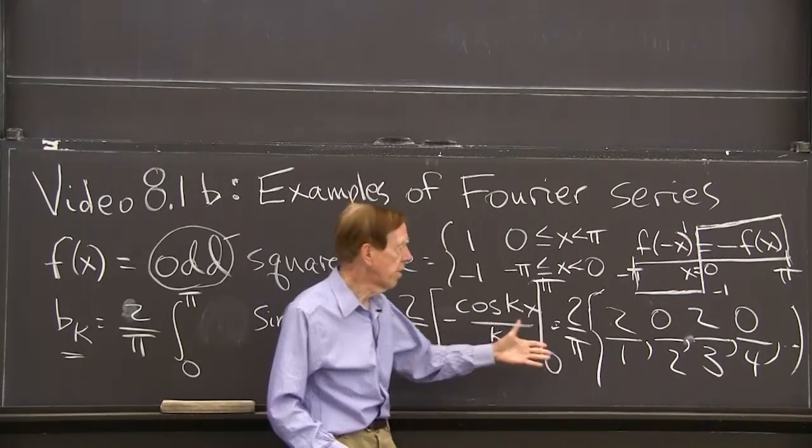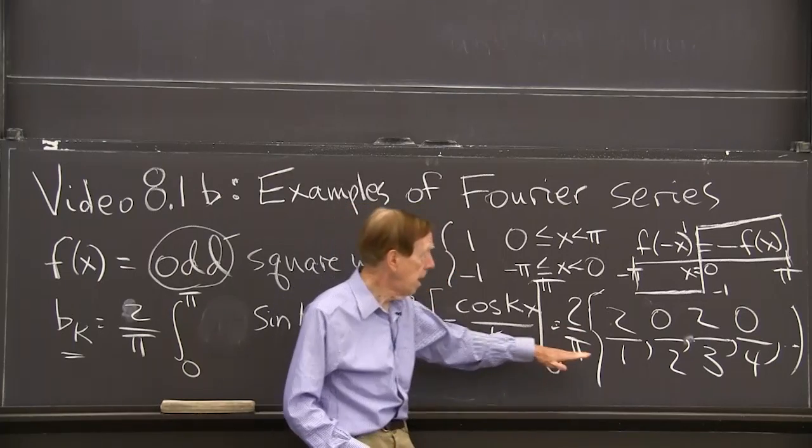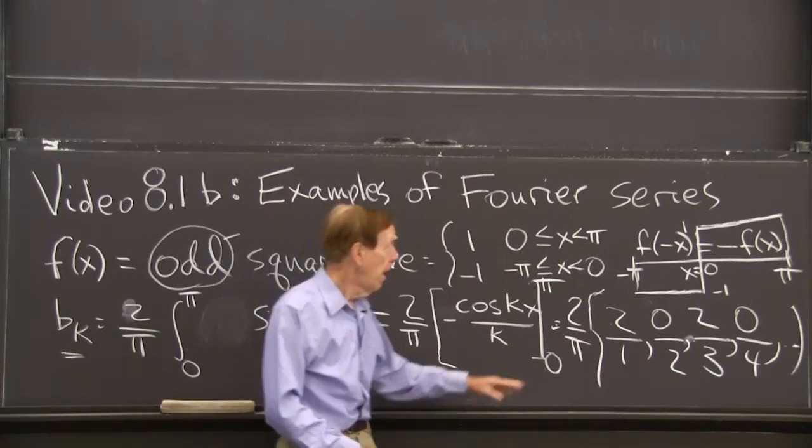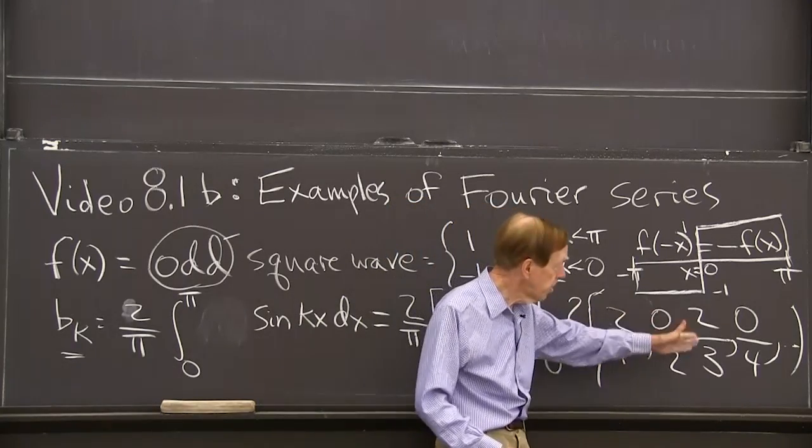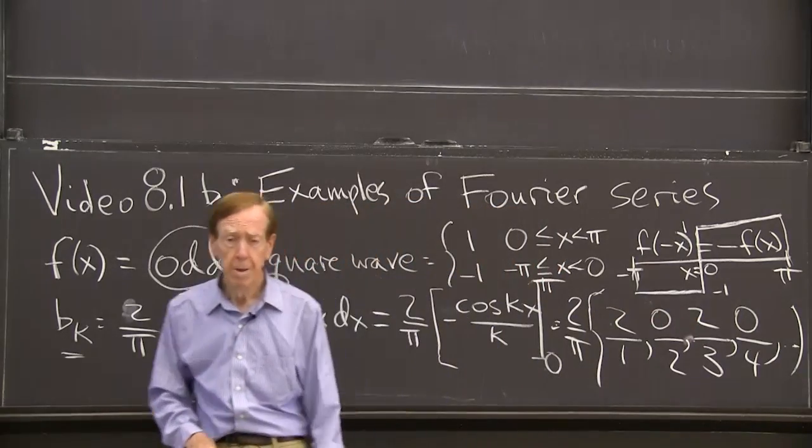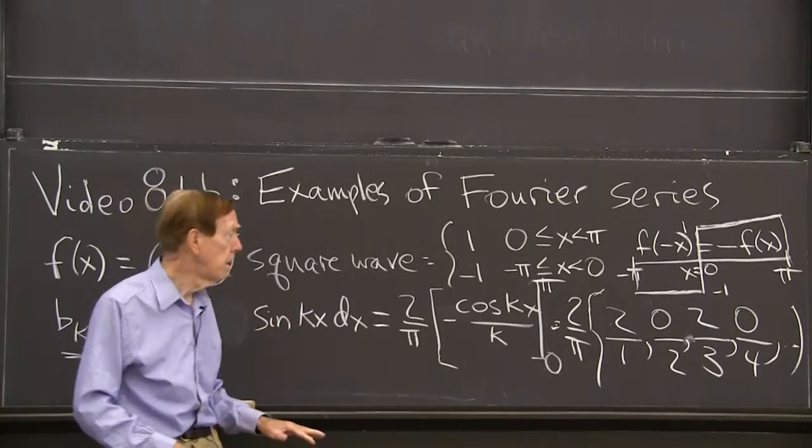The pattern for the integrals is the k is going 1, 2, 3, 4, 5. And this part gives me a 2 or a 0 or a 2 or a 0 in order. If you check that, you'll get it.